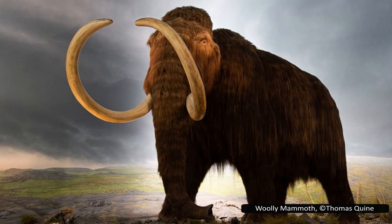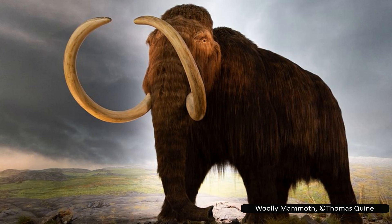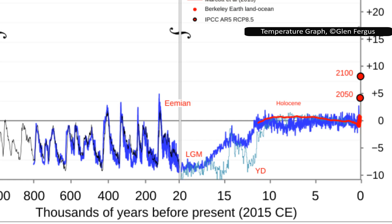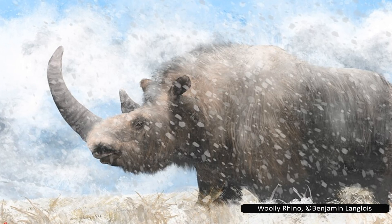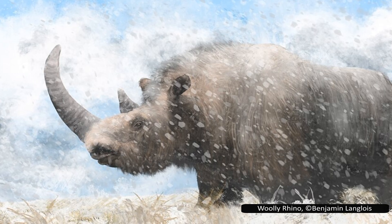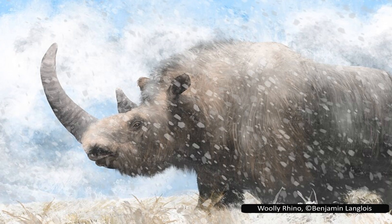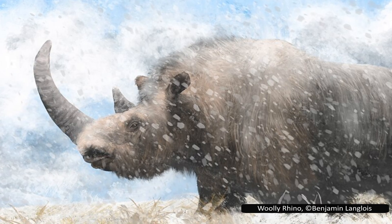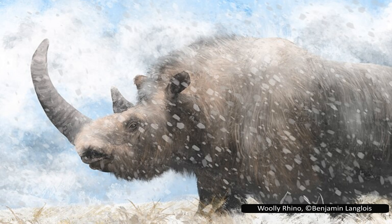The end of the Pleistocene was a time of rapid and dramatic change. After thousands of years of glacial advances and retreats, the last ice age began to thaw around 20,000 years ago. Temperatures rose, ice sheets melted, and sea levels climbed, reshaping continents and ecosystems. These shifts caused major changes in habitats. Tundra and steppe environments shrank, replaced by forests and wetlands. Many animals that thrived in cold, open landscapes suddenly found their homes disappearing. Food sources became less reliable, and ecosystems grew more fragmented. But climate alone doesn't explain everything. Some megafauna survived in refuges, while others vanished even in areas where conditions seemed suitable.